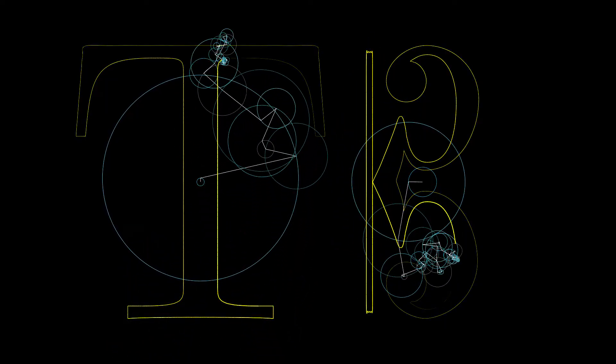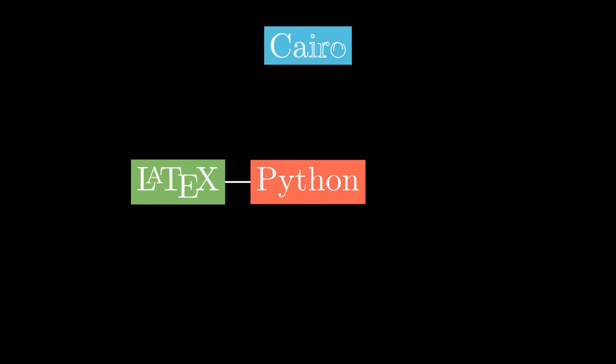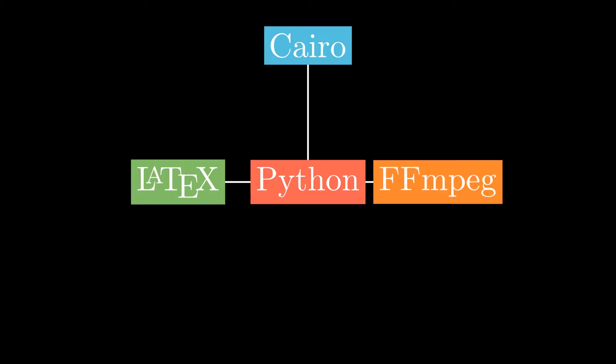Manim is composed of five parts. The first and most important is Python — you could say it is like its heart. The second part is LaTeX, the program used to write texts and formulas. The third part is Cairo, the program that makes the figures. The fourth is FFmpeg, the one that brings the frames together to form the video. And finally, Sox, the audio program.